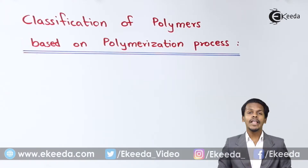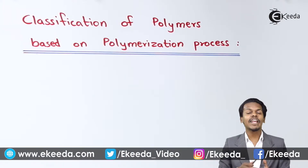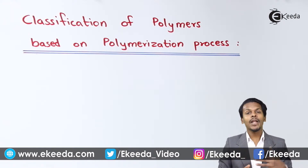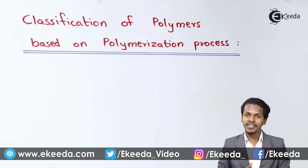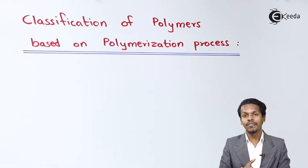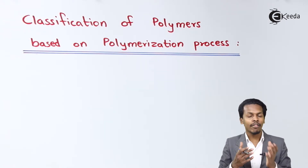So friends, we are talking about the classification of polymers based on the polymerization process. There are basically two polymerization processes from which we could get two kinds of polymers.